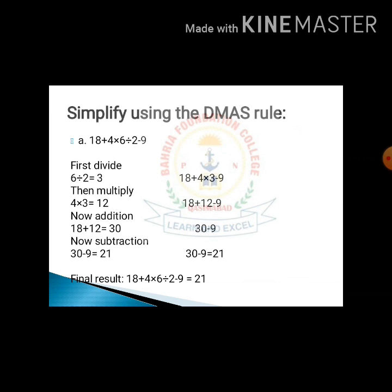Now the expression we have is 18 plus 12 minus 9. In the third step we do the addition: 18 plus 12, and the answer is 30. In the last step we do the subtraction: 30 minus 9 is 21.